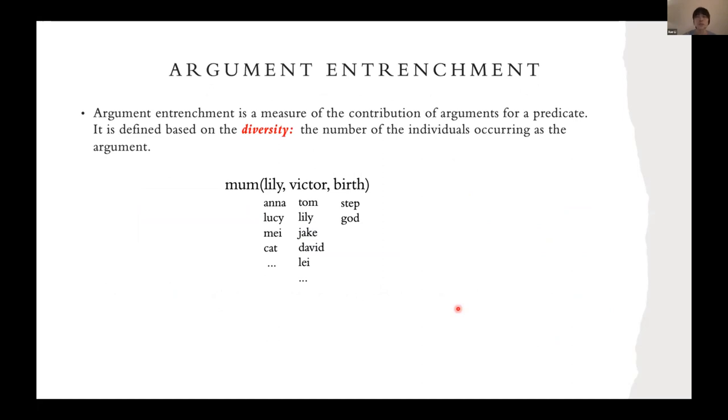We will start with argument entrenchment. It is a measure for how important an argument is for a predicate. We believe it is based on how diverse an argument can be.